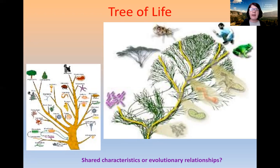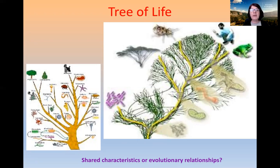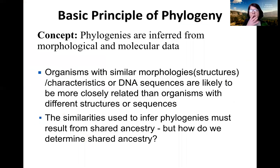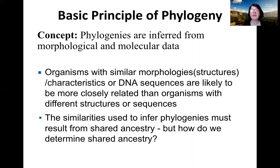Should the tree be based on shared characteristics or evolutionary relationship? Are those two approaches mutually exclusive? Phylogenies are built from both morphological and molecular data. The basic principle is that organisms with similar morphologies — similar structures and characteristics — or similar DNA sequences are likely to be more closely related than organisms with different structures and sequences.